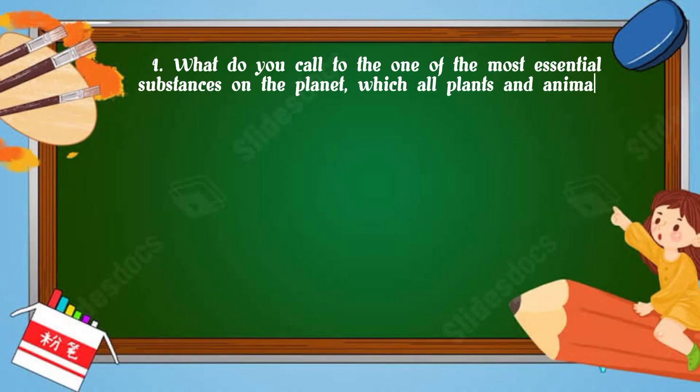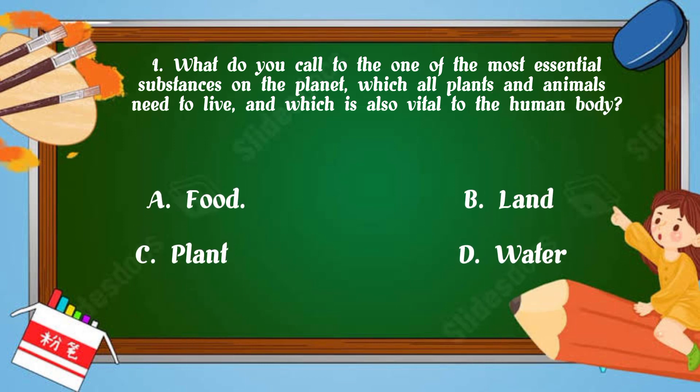Number 1: What do you call one of the most essential substances on the planet which all plants and animals need to live and which is also vital to the human body? A. Food, B. Land, C. Plant, D. Water. Your timer starts now. Good job! The correct answer is the letter D.